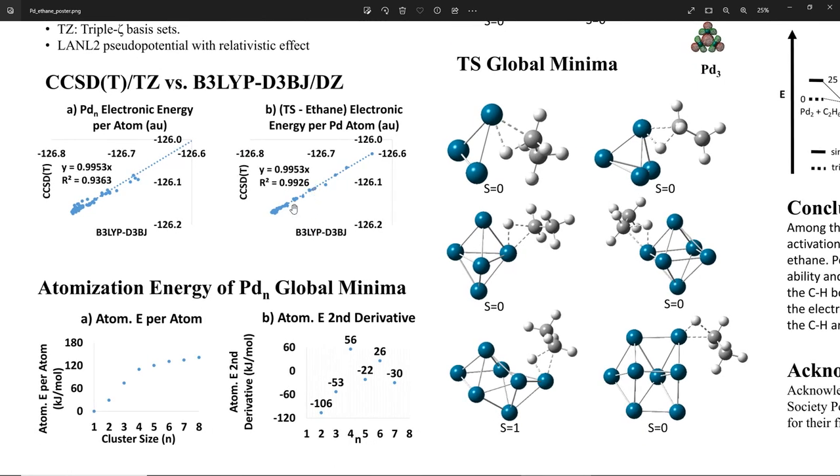We calculated the atomization energies of the palladium cluster global minima. We can see the atomization energy per atom increases monotonically as the cluster size increases. We also looked at the second derivatives of the atomization energy. We see two positive numbers and four negative numbers. Those four negative numbers mean palladium 2, 3, 5, and 7 are less stable than their neighboring cluster sizes.